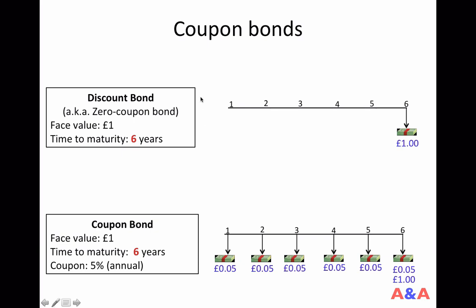Suppose you own a discount bond, also known as a zero-coupon bond, with face value one pound and time to maturity six years. If you own this bond, after six years you will receive one pound. There is no intermediate payment — you have to wait until maturity to get any cash flow.